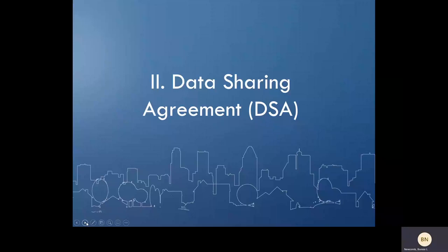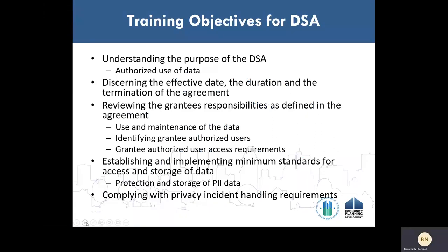We covered the computer matching agreement, its purpose, authorized uses, processes for requesting data, and the requirements to safeguard the data. Now we'll go over the data sharing agreement. For the data sharing agreement, we will review the overall purpose of the agreement and the authorized use of the data. We will discuss the effective date of the agreement, how long the agreement is effective for, and the process for termination. We're also going to review the grantees' responsibilities as outlined in the data sharing agreement, including the use and maintenance of the data, the authorized users covered in the agreement, and the authorized users' access requirements. We'll also talk about accessing, storing, and protecting the data covered under the DSA, and lastly, complying with privacy incident handling requirements.